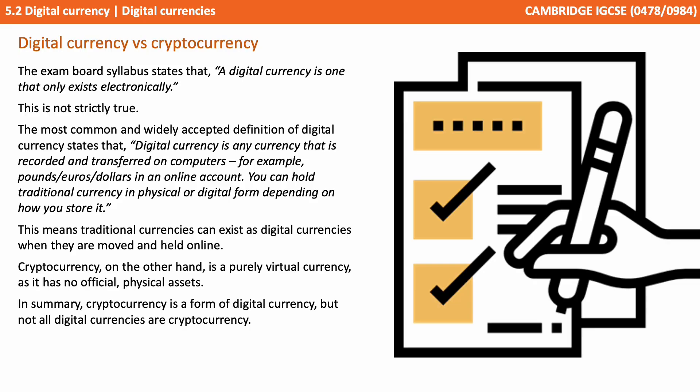Cryptocurrencies, on the other hand, are a purely virtual currency — there is no official physical version. In summary, cryptocurrency is a form of digital currency, but not all digital currencies are cryptocurrencies.